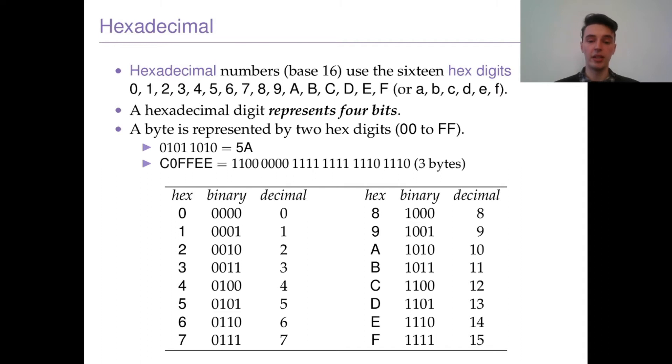A hexadecimal digit represents four bits. A byte, which the computer reads, is eight bits. So we can put two hexadecimal numbers into a byte, and that can represent everything from 00 up to FF.